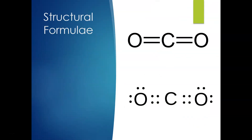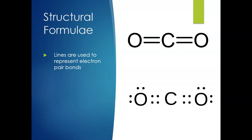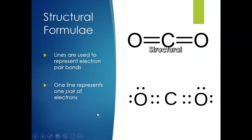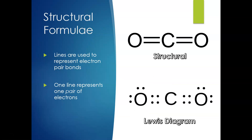Let's look at carbon dioxide. We've got two different ways of drawing it. We've got the Lewis diagram with carbon in the middle — it has the most bonds, which is why it's central. However, we also have the structural formulae. Lines are used to represent electron pair bonds: one line represents one pair of electrons. So a pair of electrons is shown as a line, and that's the structural formulae compared to the Lewis diagram.